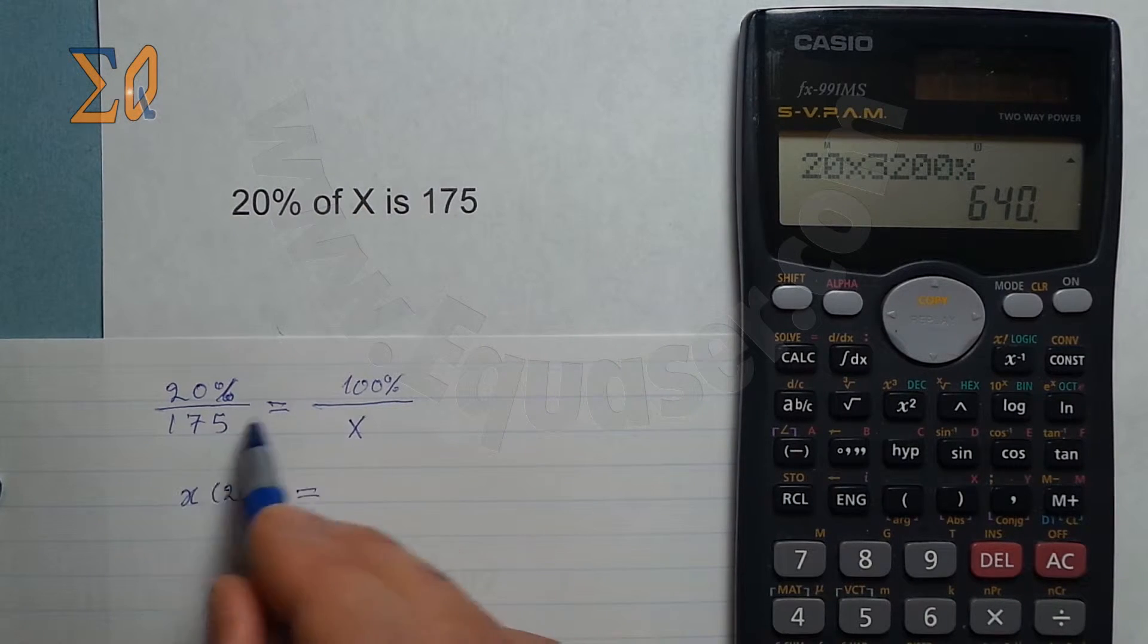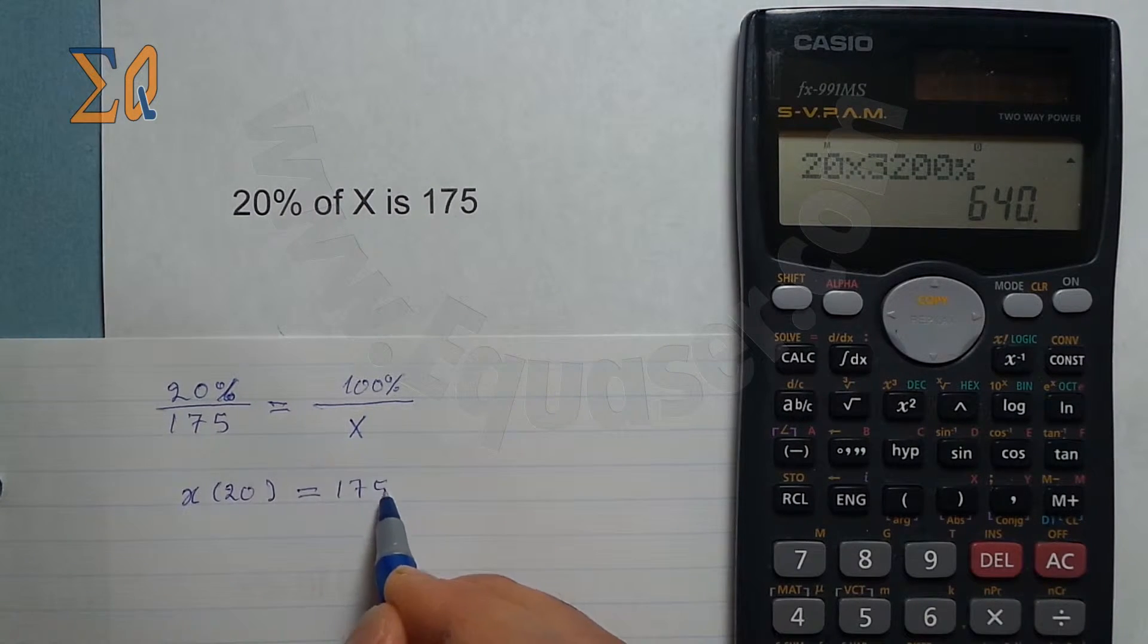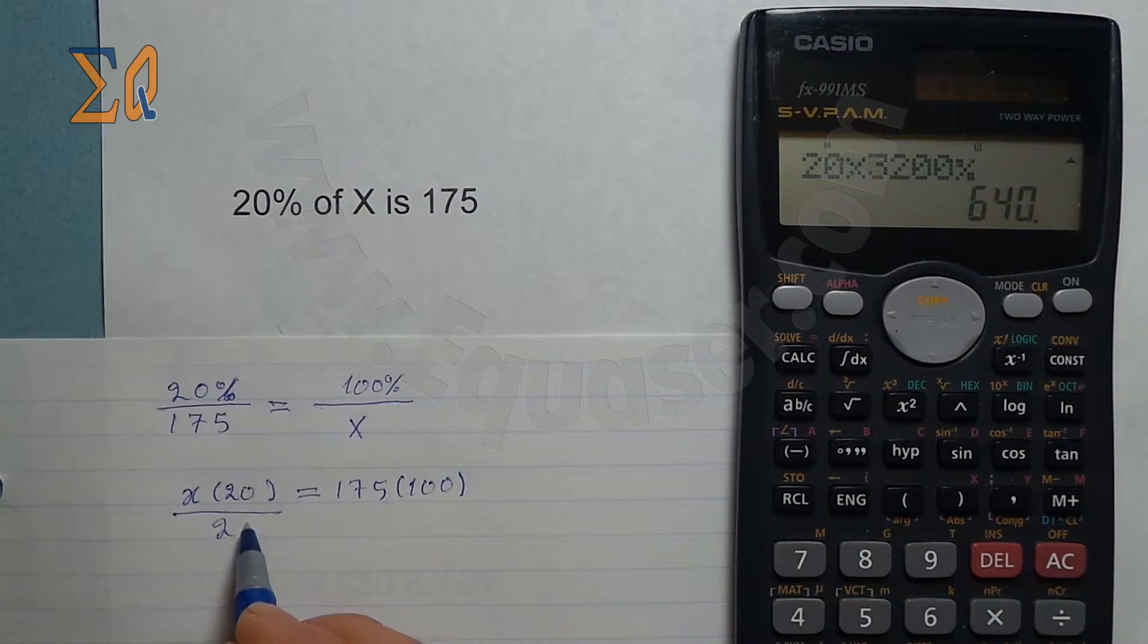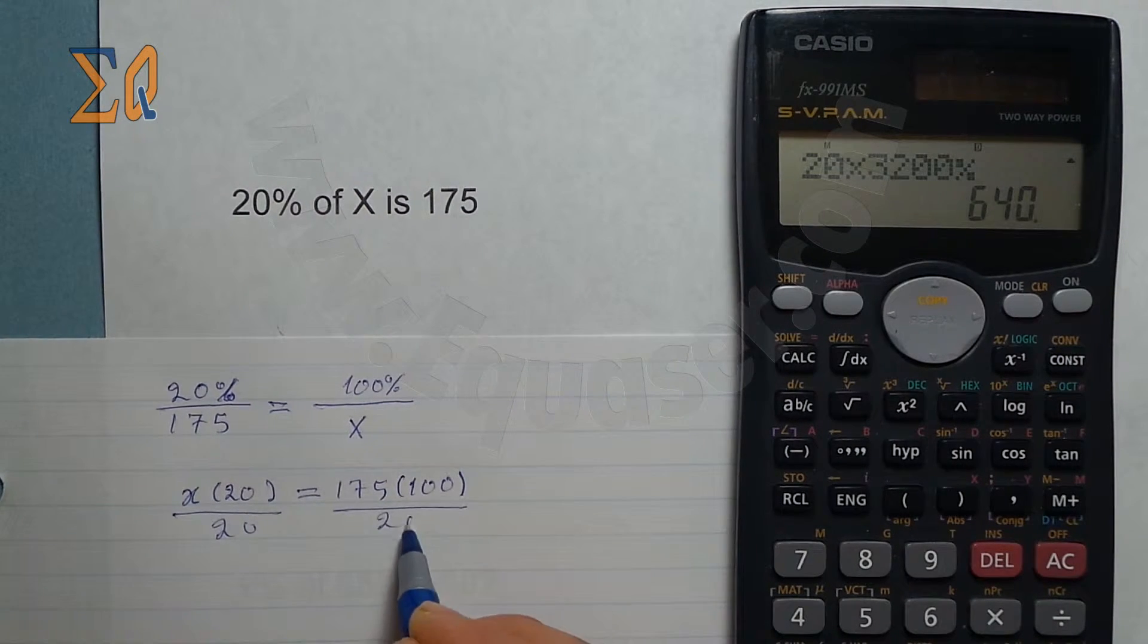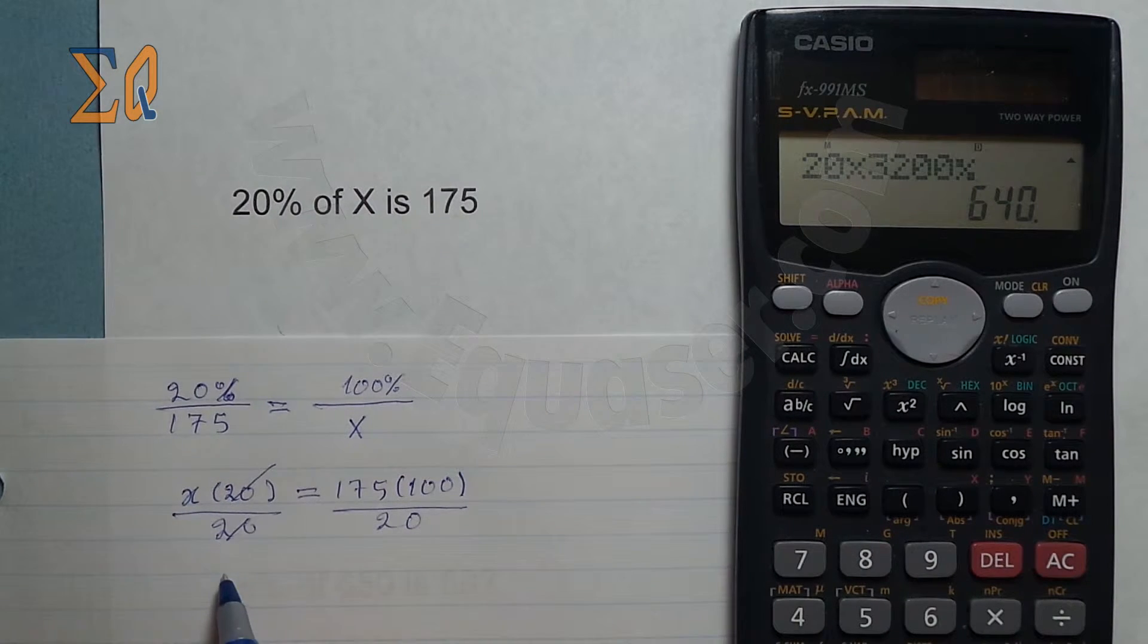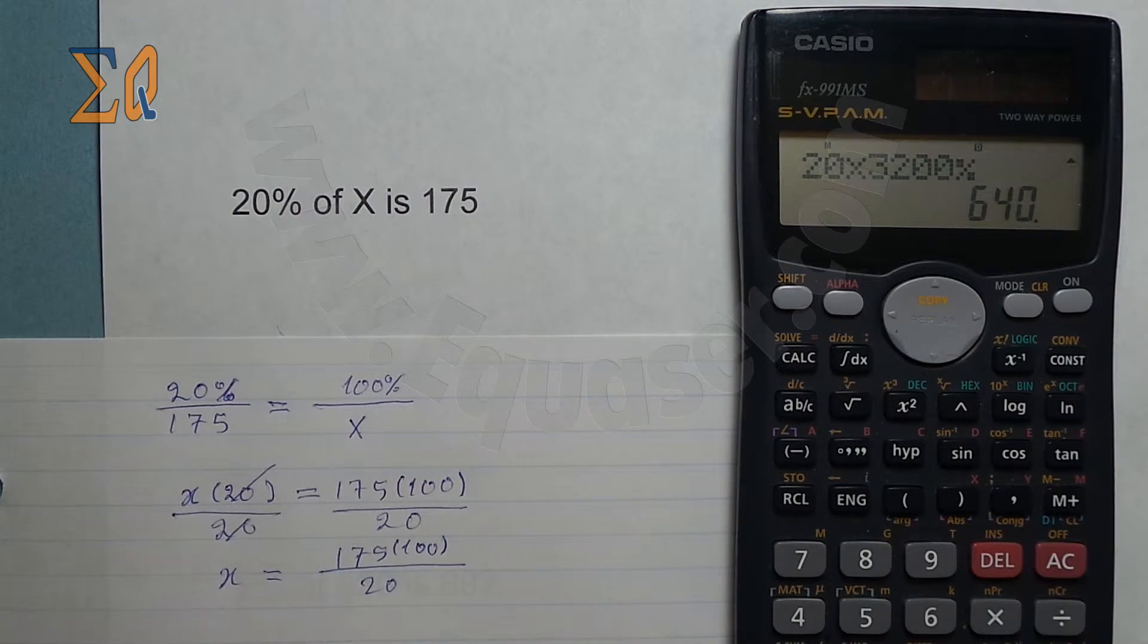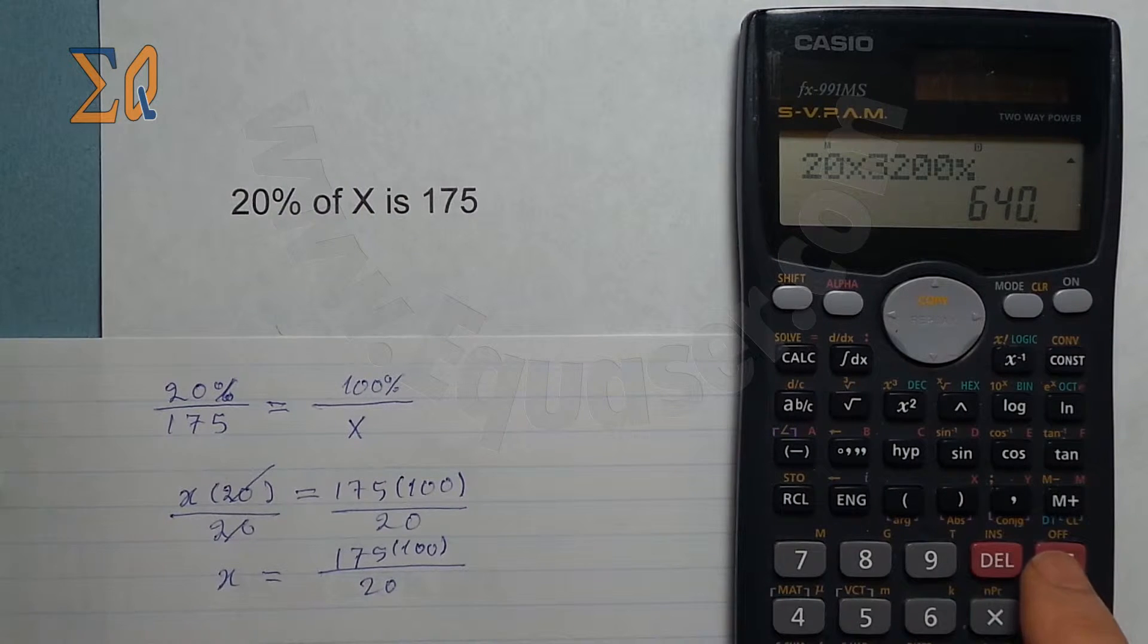Divide both sides by 20. This cancels, so X is 175 times 100 divided by 20. Now let's do it with a calculator.